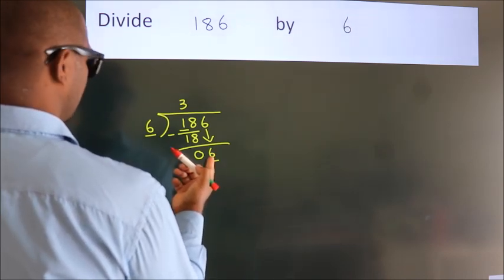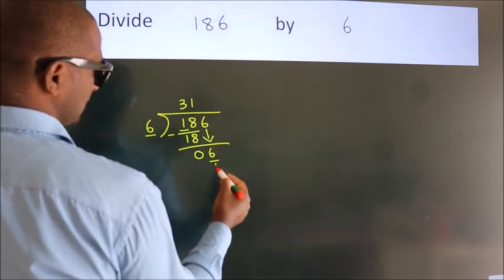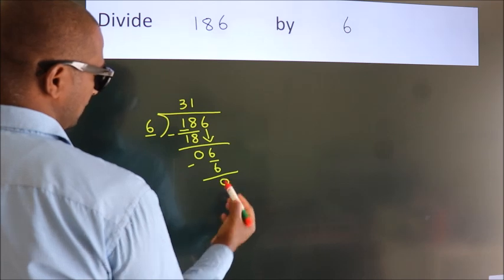When do we get 6? In 6 table. 6 ones, 6. Now we subtract. We get 0.